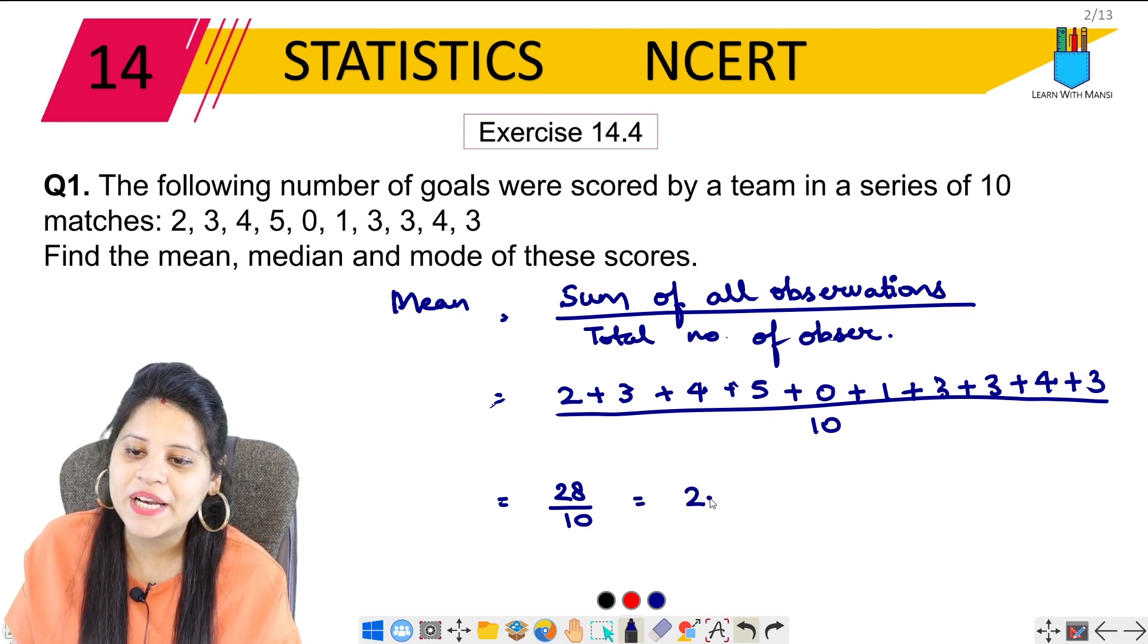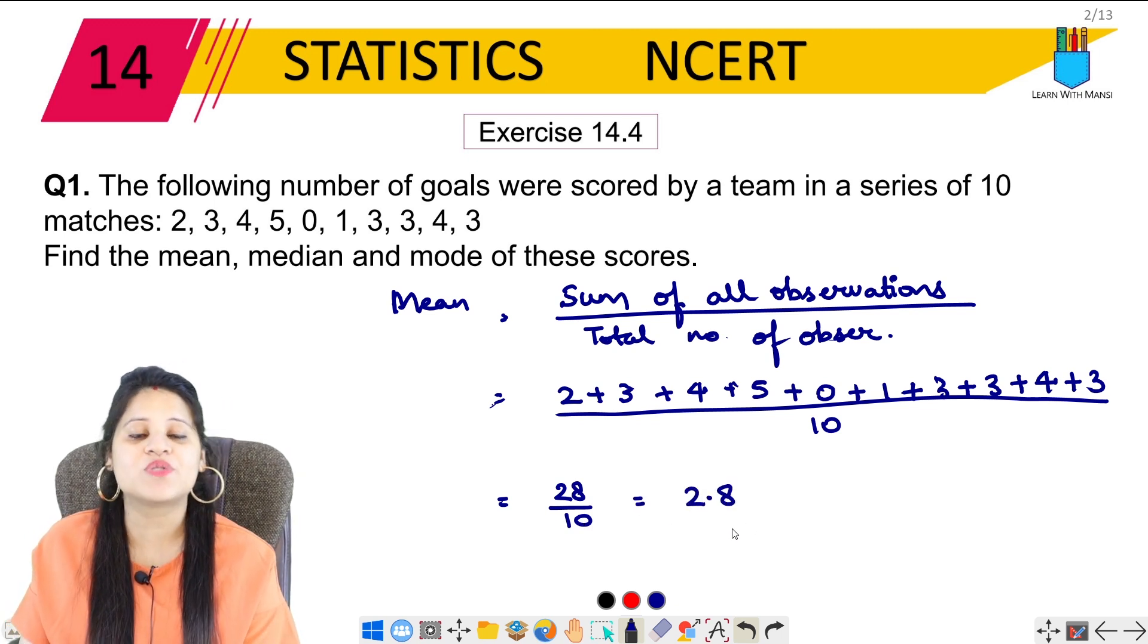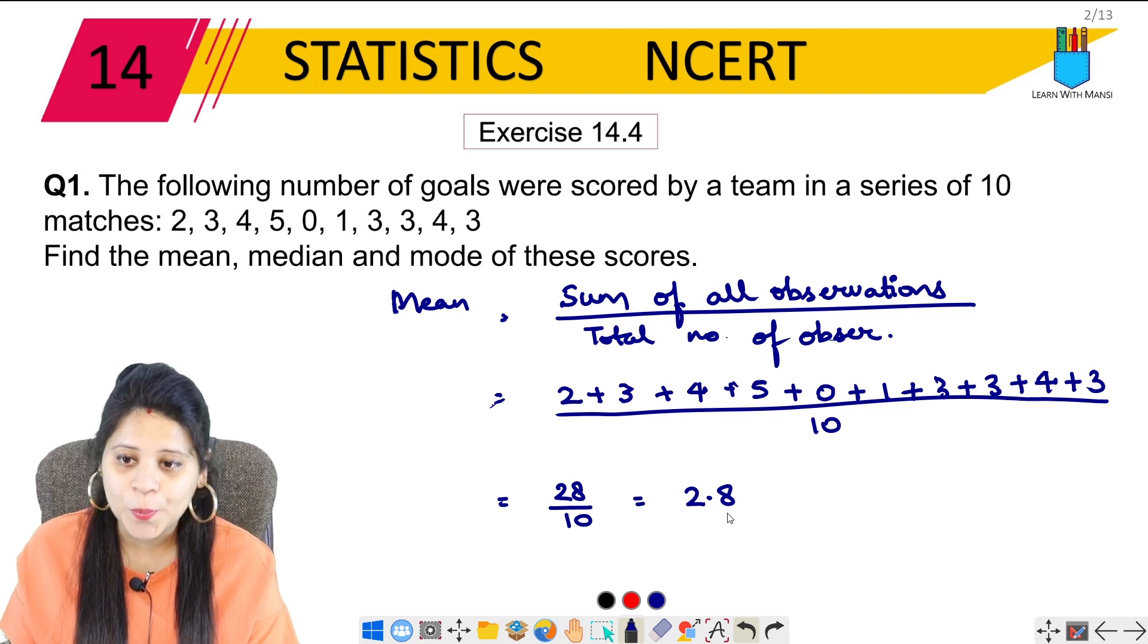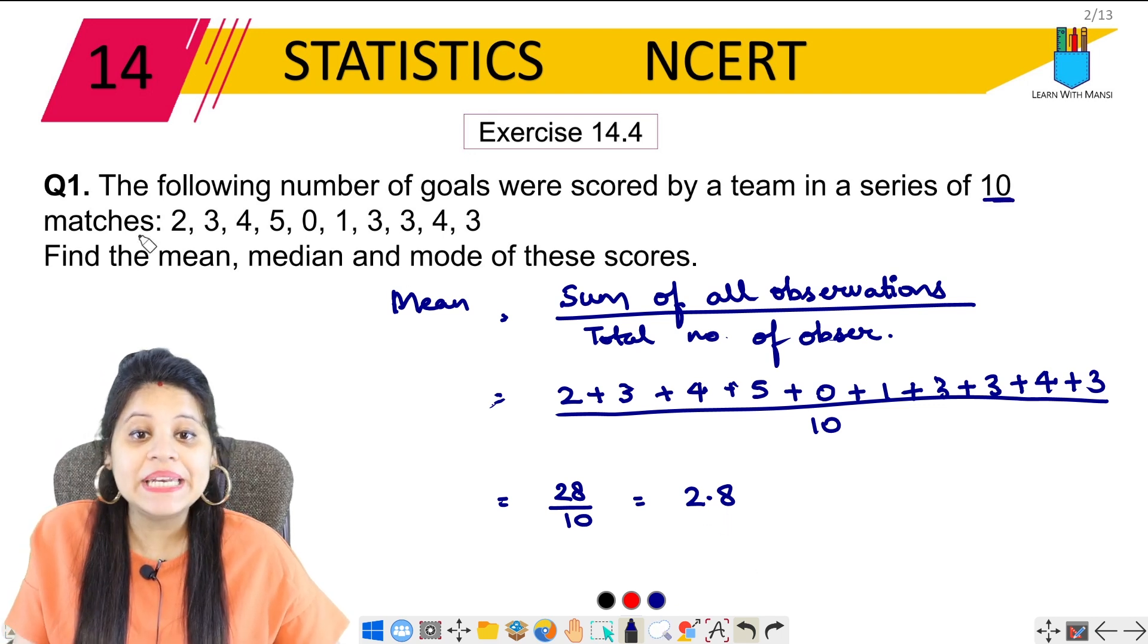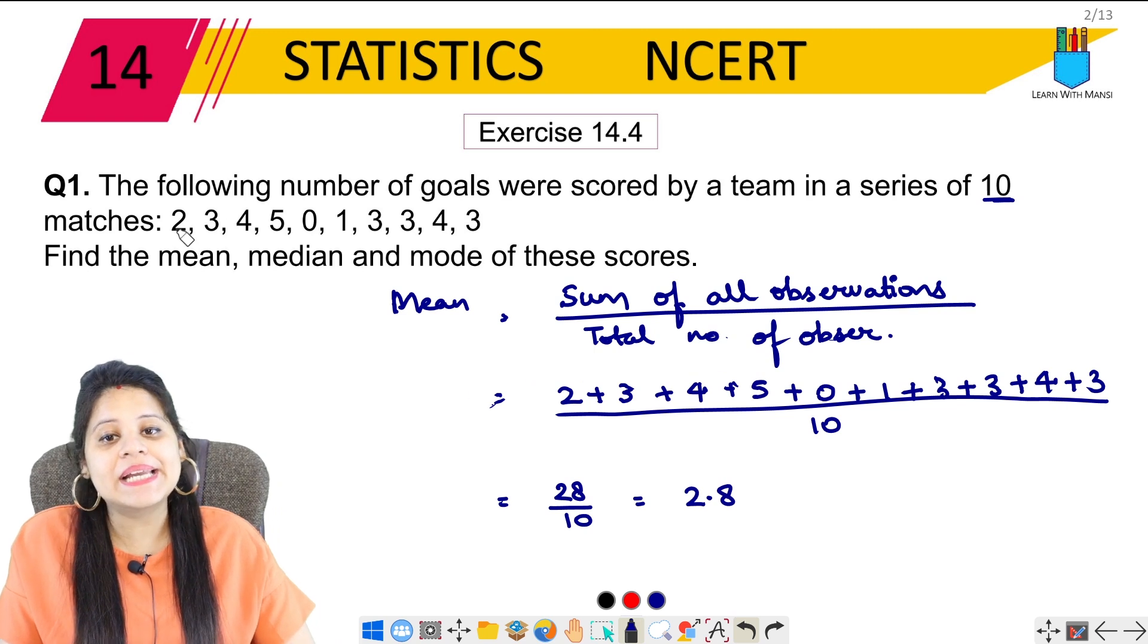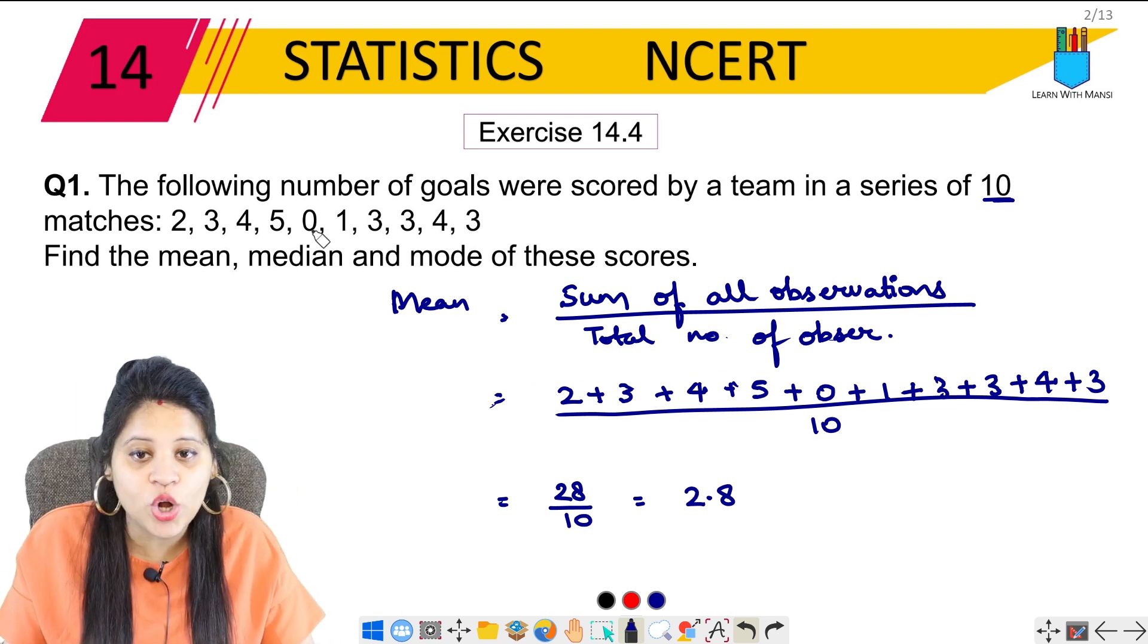28 upon 10 simply 2.8. So the mean is 2.8. So next we have to find median.